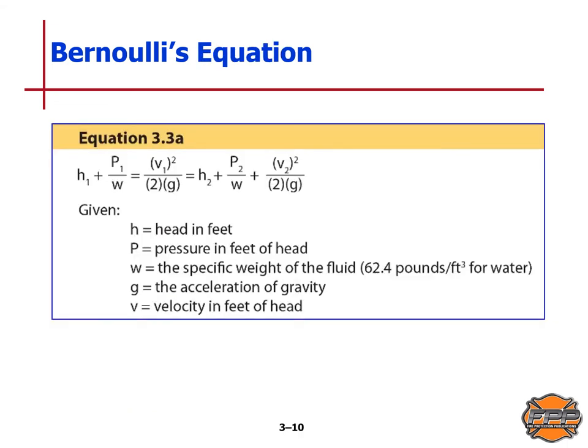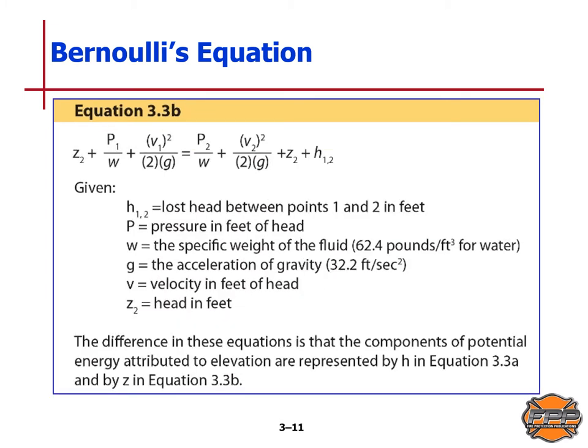Bernoulli's equation is in your text. The givens are: H is head in feet, P is pressure in feet of head, W is specific weight of the fluid (62.4 pounds per cubic foot for water), G is the acceleration of gravity, and V is the velocity in feet of head. The second formula, Equation 3.3b, has slightly different variables: lowercase h sub 1.2 is loss head between points 1 and 2 in feet.